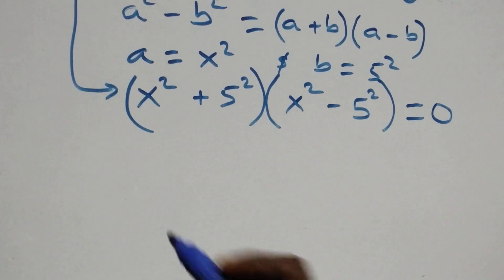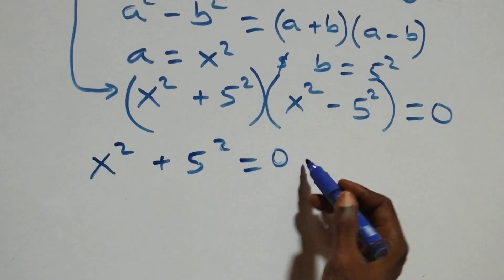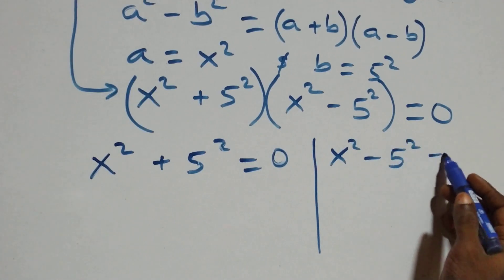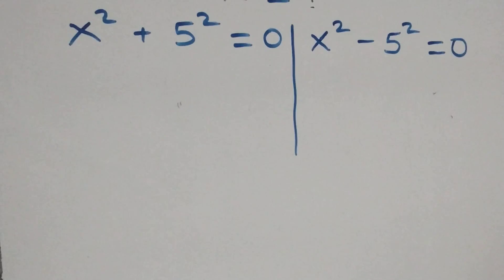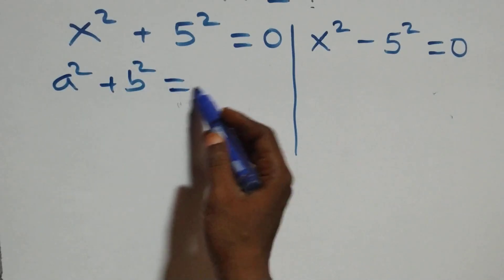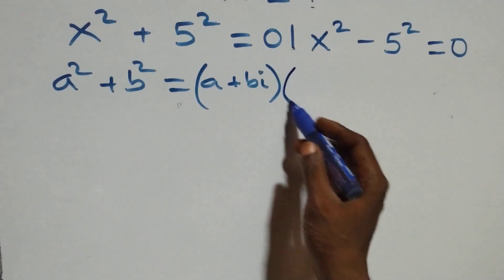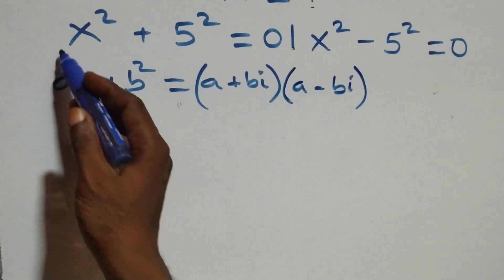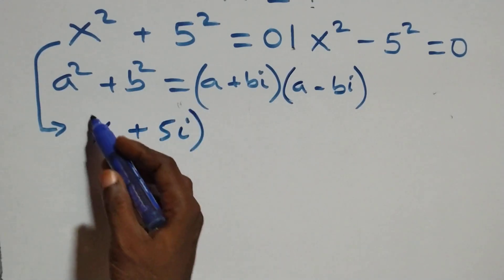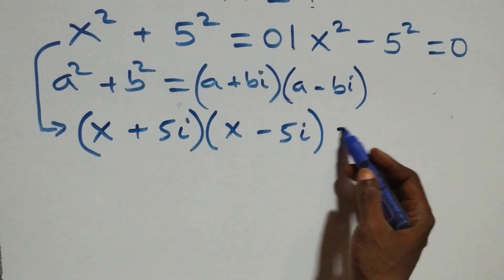We have two possible cases. The first one: x squared + 5 squared equals to 0. This follows the identity a squared + b squared equals (a + bi)(a − bi). So it becomes (x + 5i)(x − 5i) equals to 0.